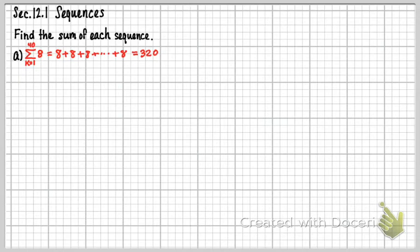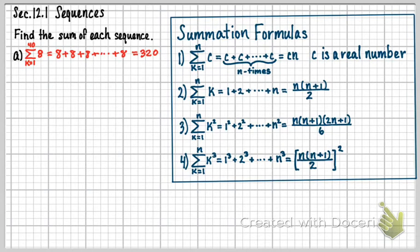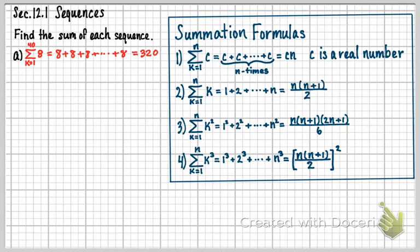Take a look at these summation formulas. The one we actually used here was this first one, number 1. We went from k equals 1 to n, and this was n times. All I did was take that number c, which I had here, and times it by where I ended. So that gave us 320.